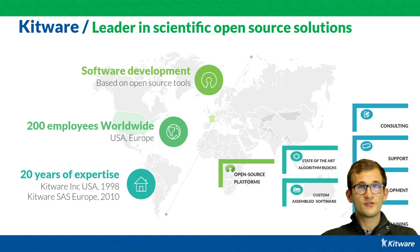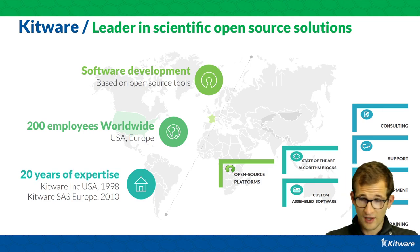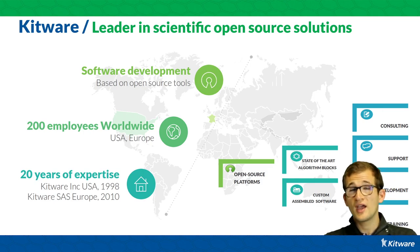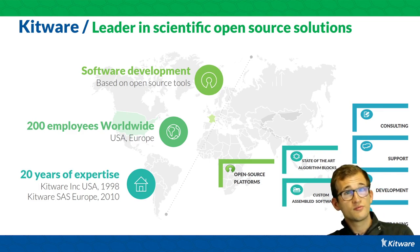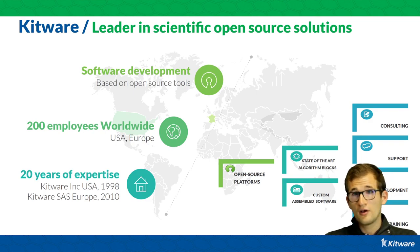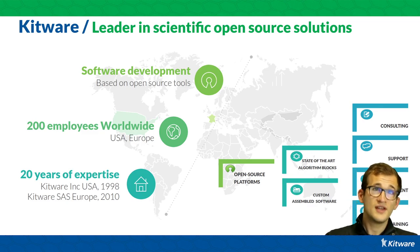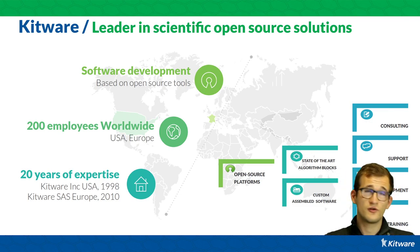Kitware has been developing software systems for more than 20 years now. It represents more than 200 employees worldwide, with about 30 here in Lyon, France. Kitware is proud to be known for its open source software, especially visualization tools such as VTK, ParaView, CMake, ITK, Slicer, and also LidarView — the reason why you are here today. We are mostly developing software building blocks and toolkits such as VTK for developers.